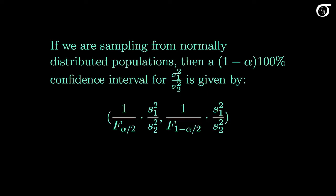Recall that if we are sampling from normally distributed populations, then a (1-alpha) times 100% confidence interval for the ratio of population variances is given by this interval. If we are sampling from normally distributed populations, then this method works perfectly, in the sense that the true coverage probability of the interval method will be exactly equal to the stated coverage probability. In other words, the true confidence level will be the same as the stated confidence level.